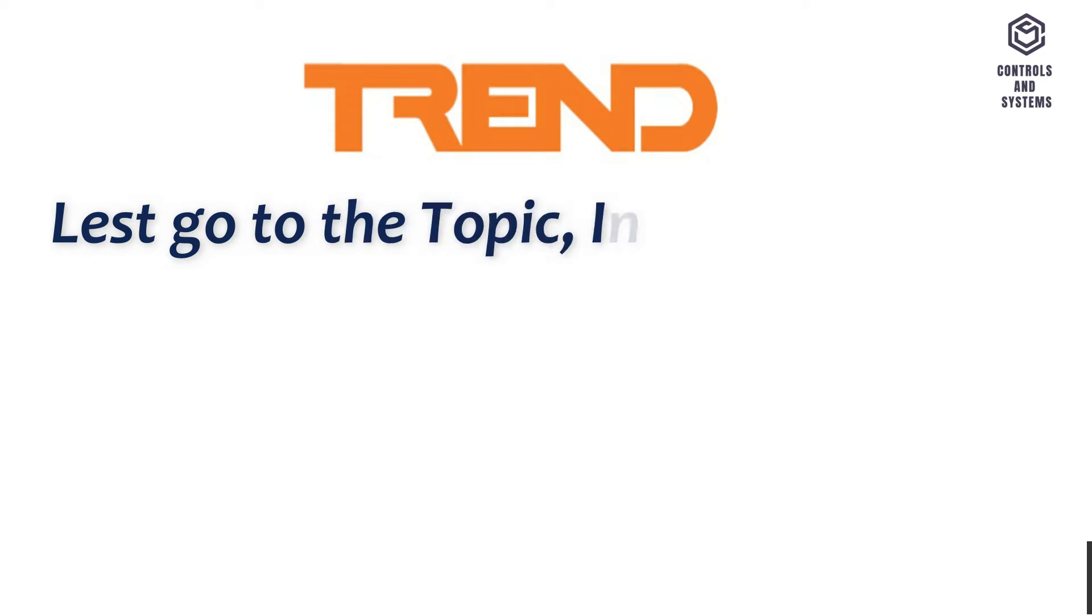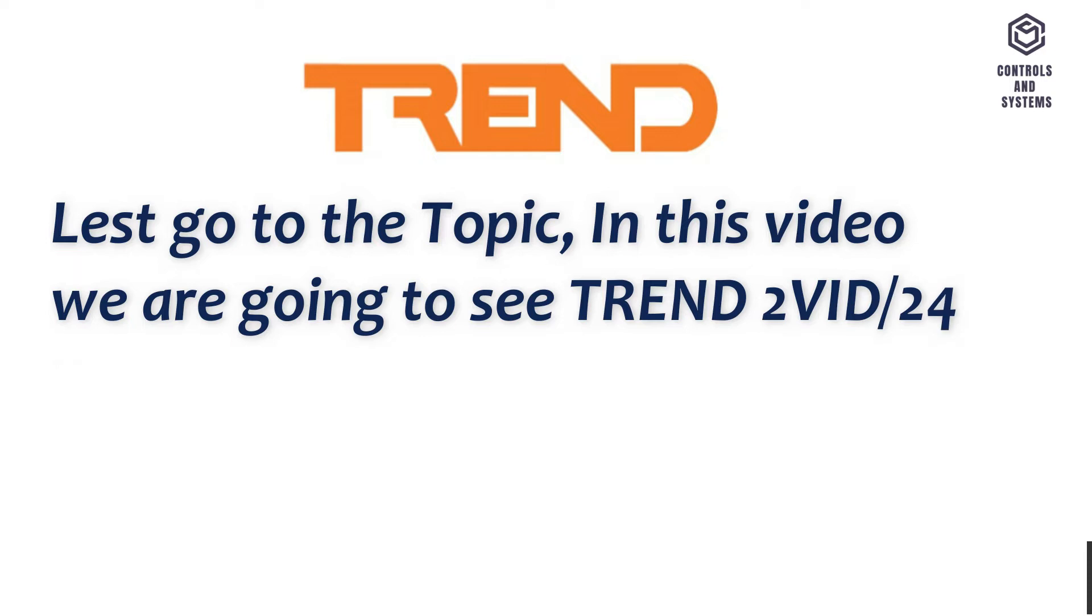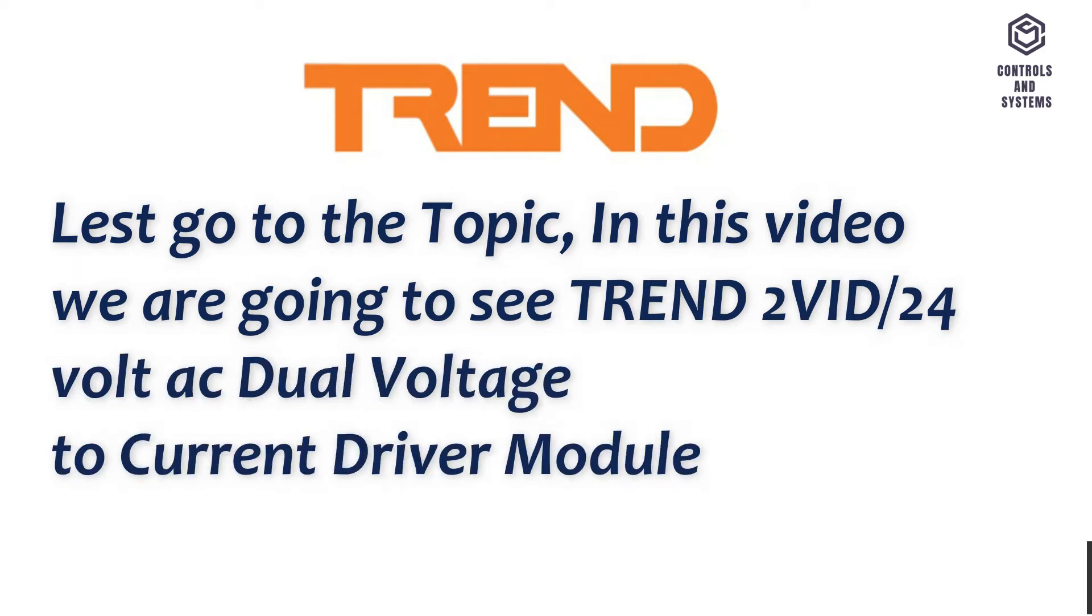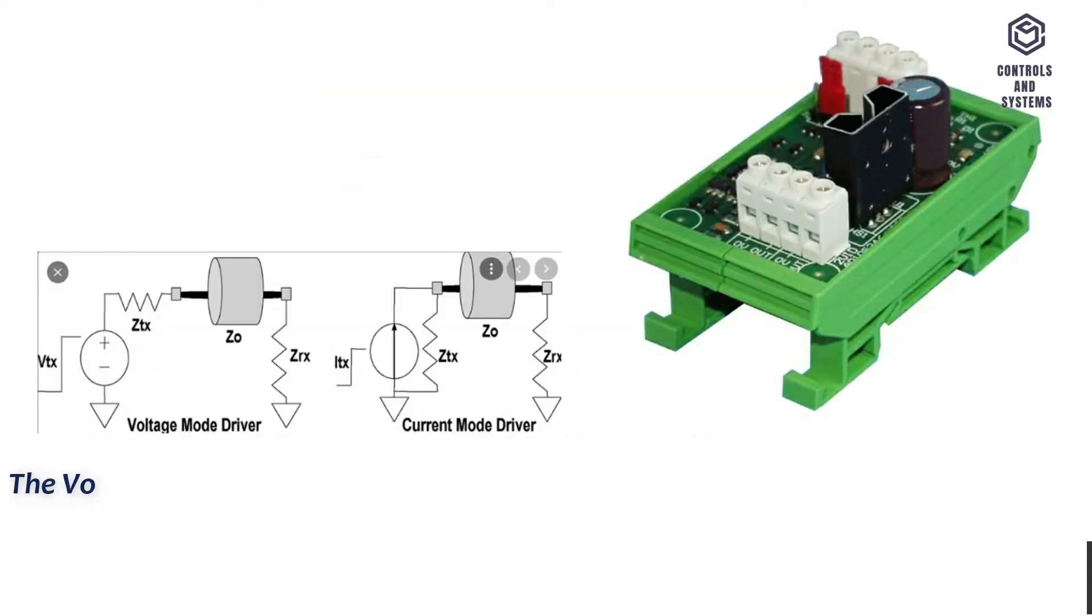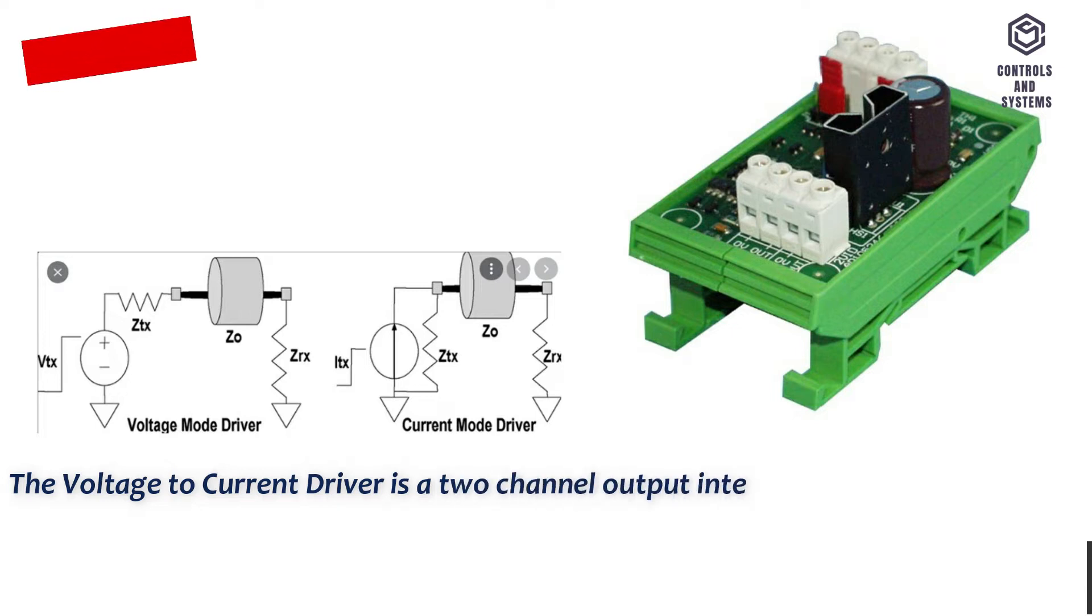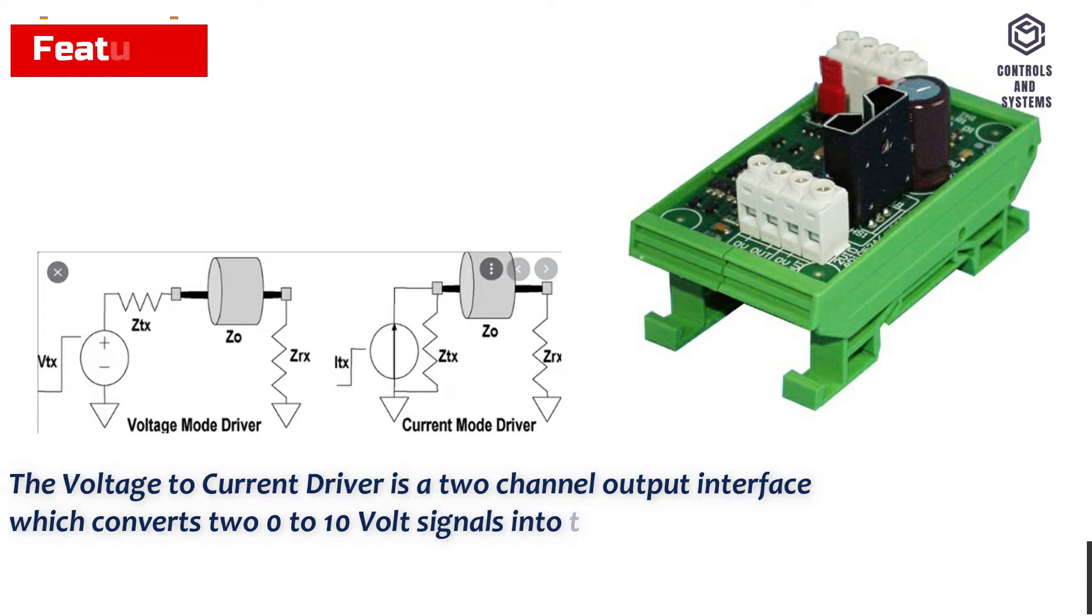Let's go to the topic. In this video we are going to see the 2VID. The voltage to current driver is a 2-channel output interface which converts two 0 to 10 volt signals into two 0 to 20 milliamp outputs.